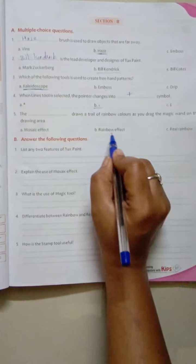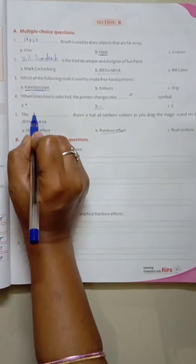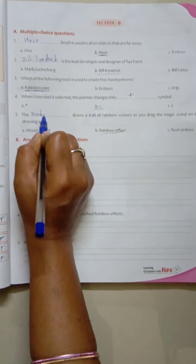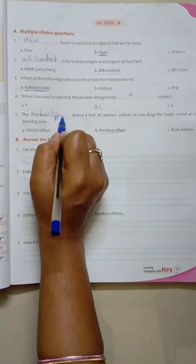Here I will underline the right answer, that is rainbow effect. Same I will be writing here. R-A-I-N rain, B-O-W rainbow, E-double F-E-C-T is the right spelling.